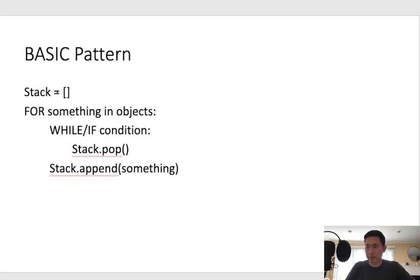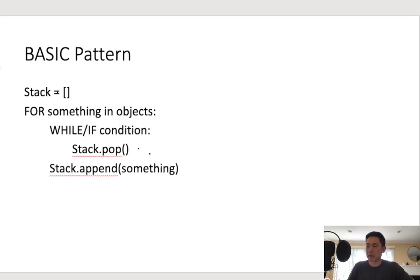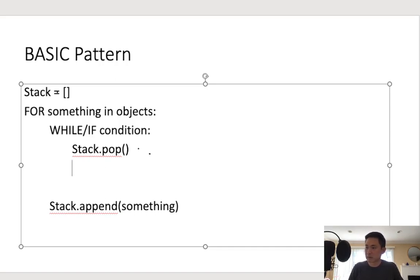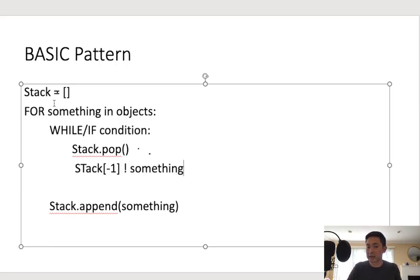In LeetCode, the basic pattern you'll be seeing is: you initialize a stack, and for everything inside of the object, there's going to be some sort of condition — a while or if. We'll probably pop something off the stack and usually add something to the stack. We do some sort of check with the very top item on our stack, like stack[-1]. With stacks, it's not going to be O(n²) time complexity — it's usually going to be O(n) time.